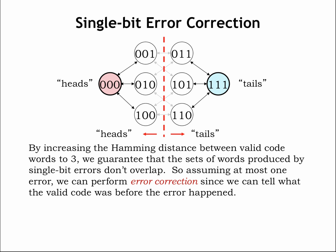Assuming that at most one error occurred, we can deduce the original codeword from whatever codeword we receive. For example, if we receive 001, we deduce that the original codeword was 000, and there has been a single-bit error.